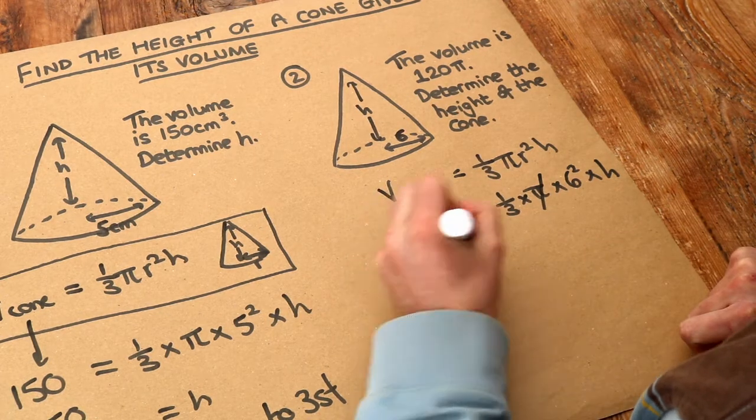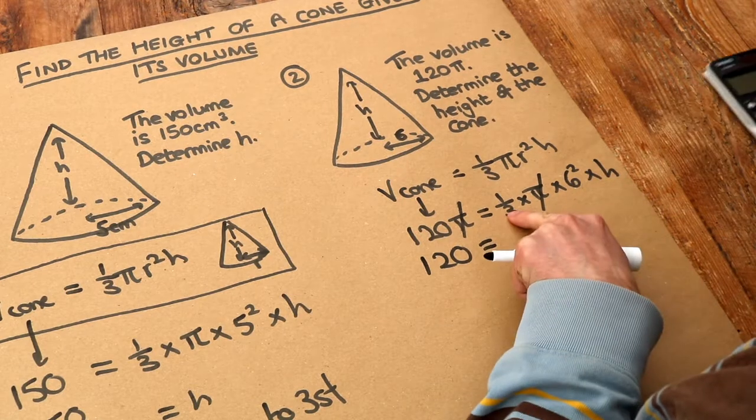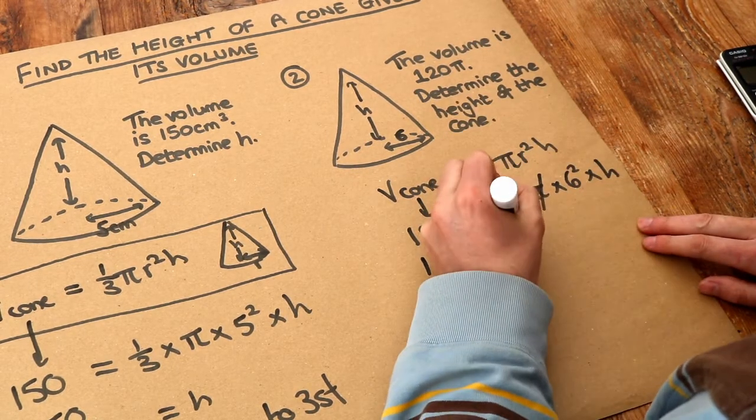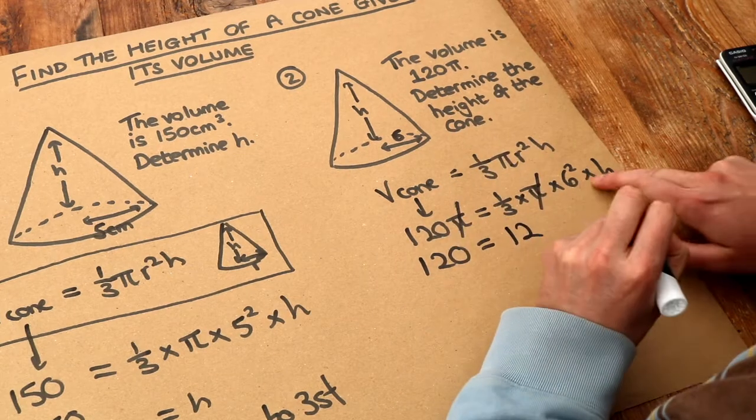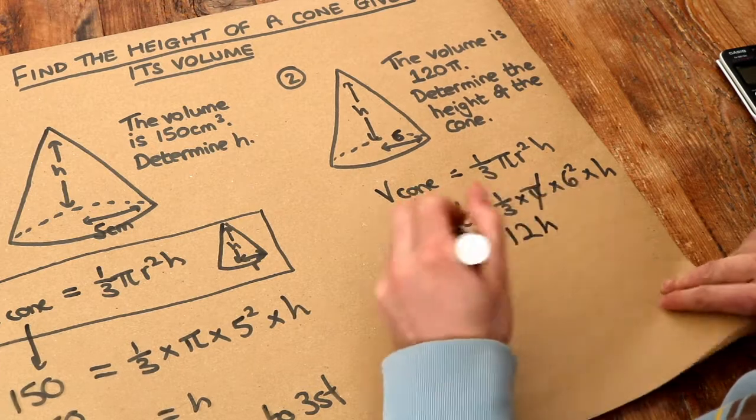And then if we wanted, we could simplify the right hand side. We've got a third times six squared times h. Well, what's a third times six squared? It's a third times 36, which is 12. But you could do that on your calculator if you wish, times by h. So 12h, and then if you just divide both sides by 12,